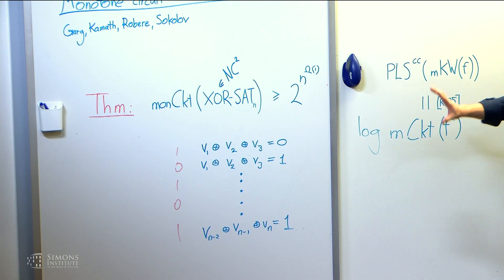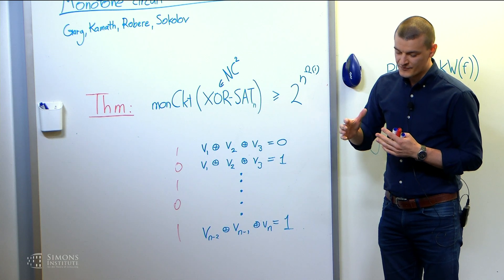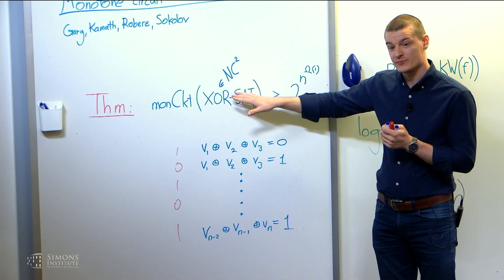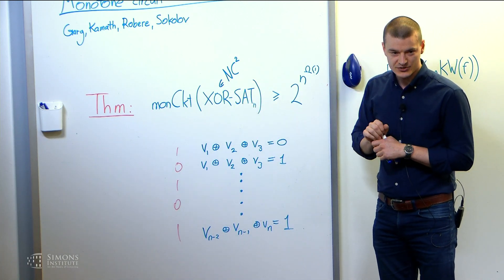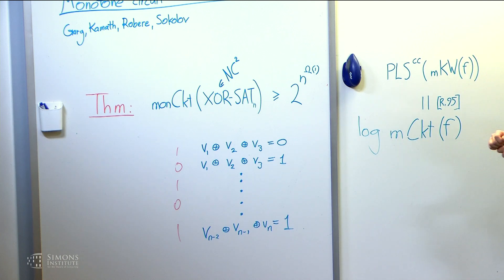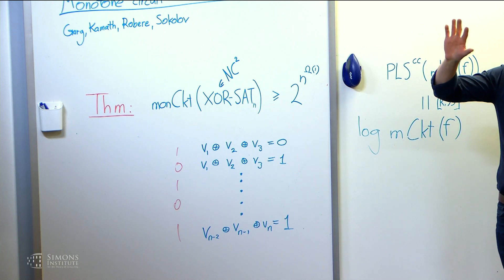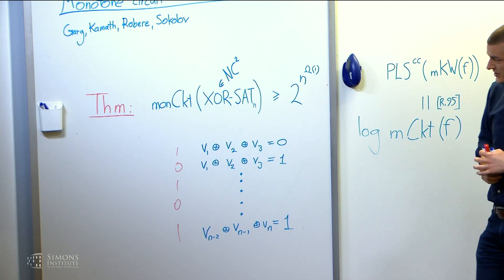To milk this a little bit more, you can also say that this is the first exponential separation between monotone circuits and monotone span programs over GF2. So XORSAT you can compute with monotone span programs. So monotone circuit complexity high, but monotone span program complexity low. The other direction Robert's work handled. So they're now separated in both directions exponentially.